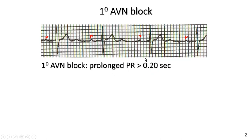In first degree AV nodal block, there is just a prolongation of the duration between the atrial contraction and the ventricular contraction. Normally these should be about 0.12 to 0.20 seconds. The whole purpose of that delay is to allow the atria to contract to complete the filling of the ventricle. About 70 to 80% of the ventricle is filled passively through blood flowing through the atria, through the open valve — tricuspid on the right side, mitral on the left side — into the left ventricle.